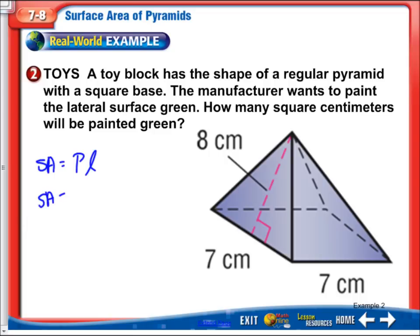So surface area is going to be, we know it's a square. So we can do 4 times 7 or just 28. Also, I forgot we need to have one half because these are triangles, right? So we have half. So 4 times 7. And then we're going to do the lateral height, which is 8.